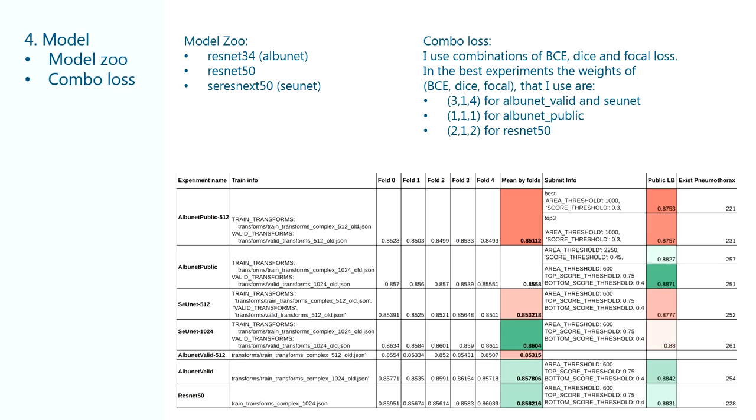Let's move on to the model I use. My model zoo consists of three architectures: ResNet34, ResNet50 and ResNext50. For each of them I apply combo loss of binary cross-entropy, dice and focal loss with unique weights for each experiment.